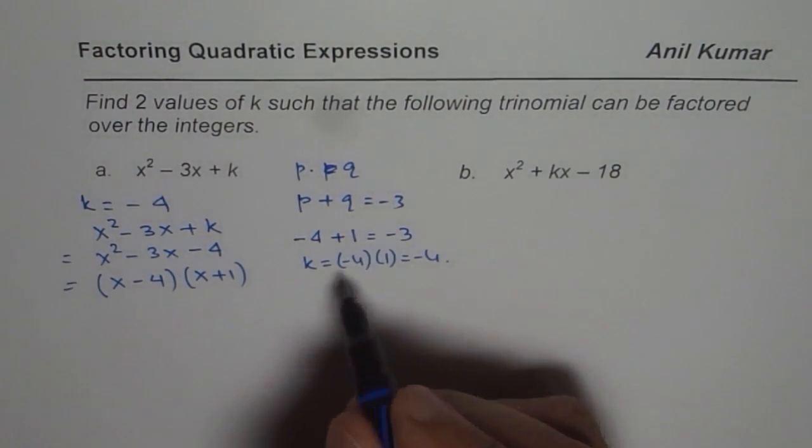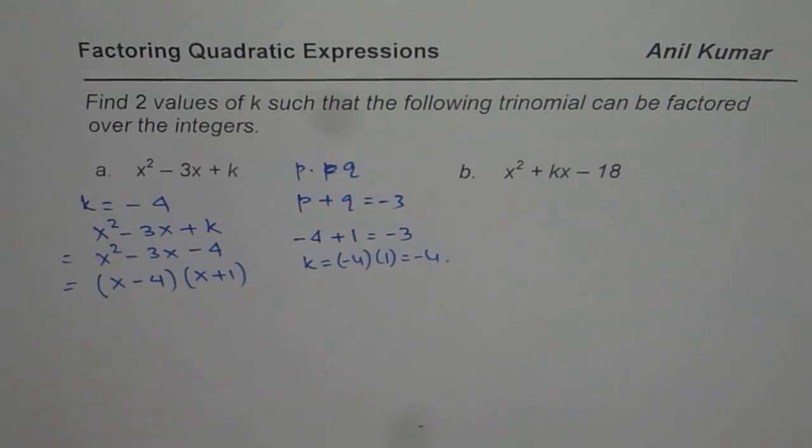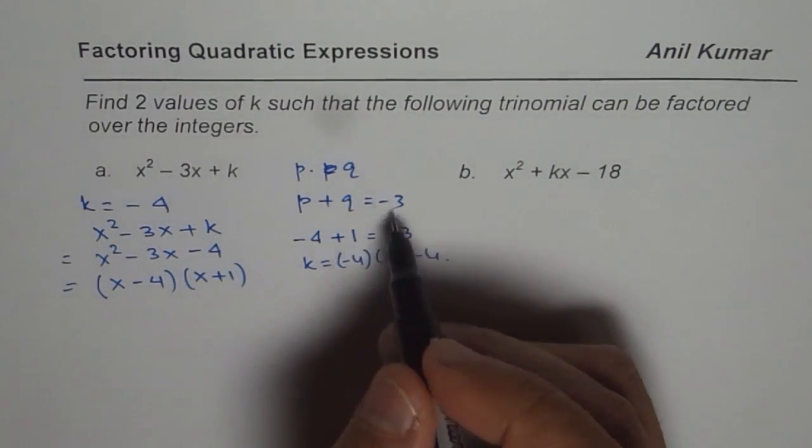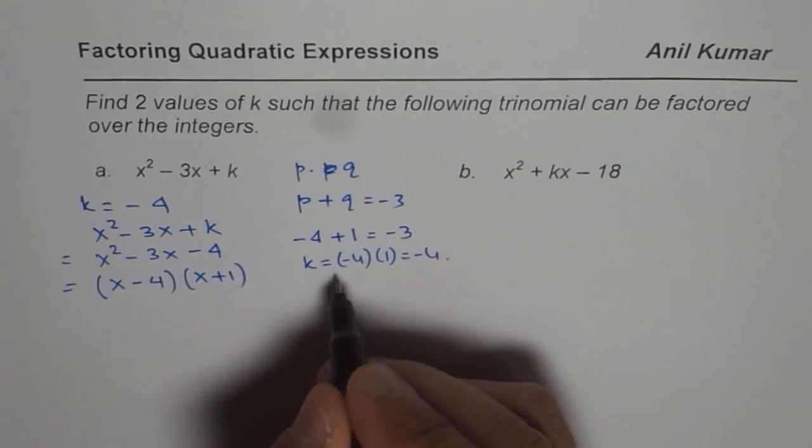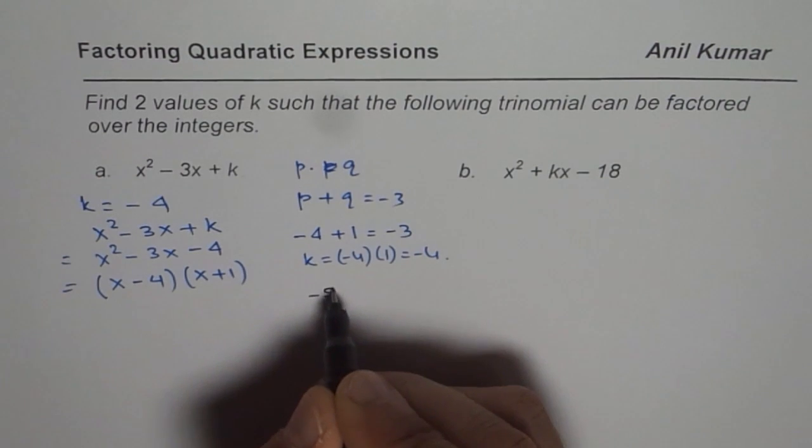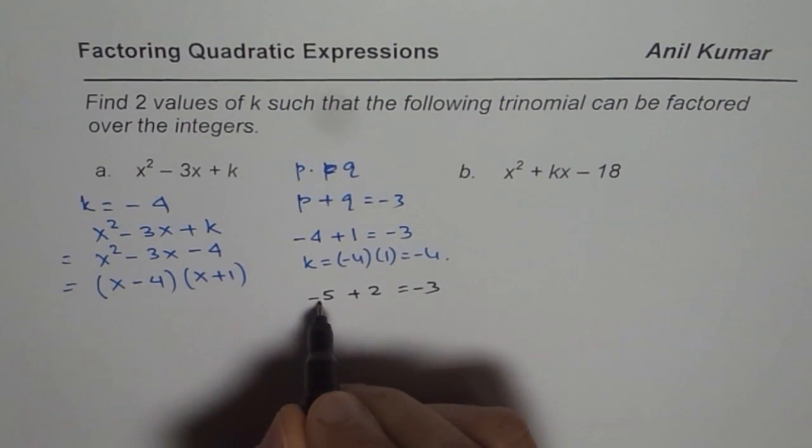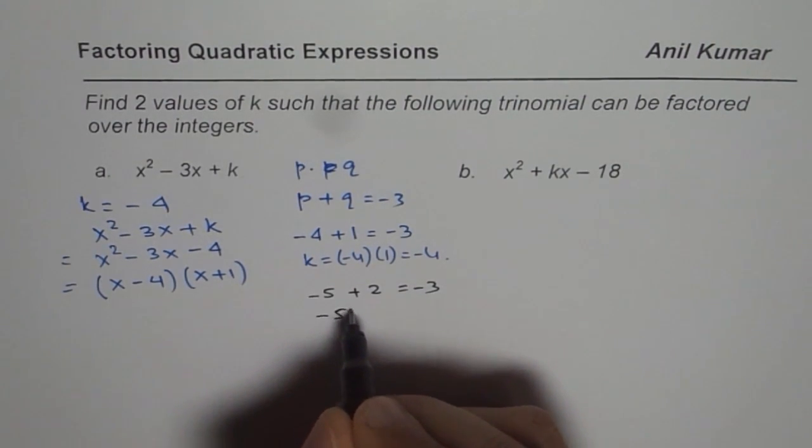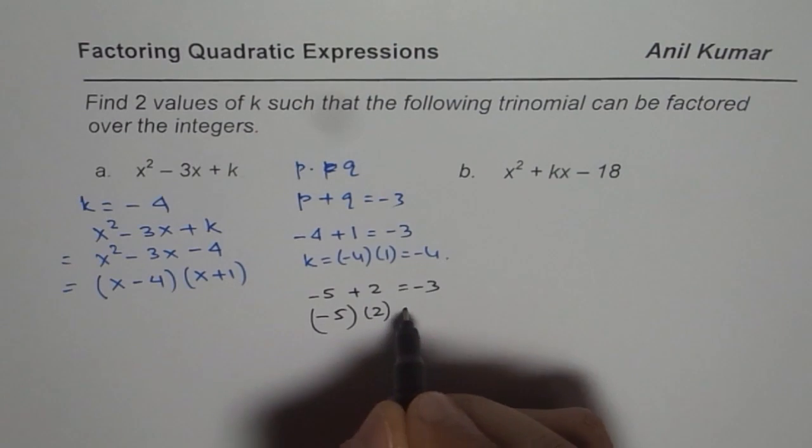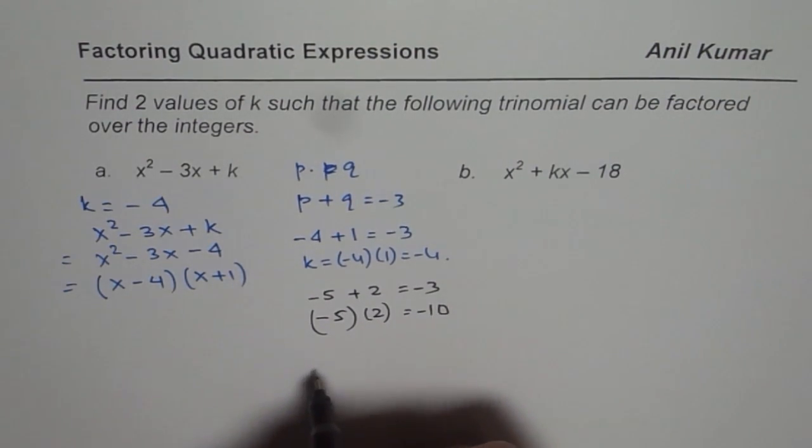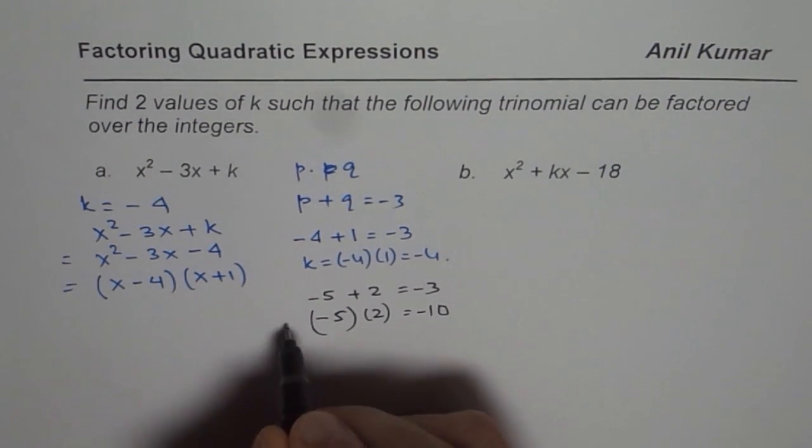Now let me select some other value. How can I get by adding two numbers minus 3? I could get minus 3 as minus 5 plus 2 equals minus 3. If I multiply these two, minus 5 times 2 is minus 10. So k is this value, minus 10.